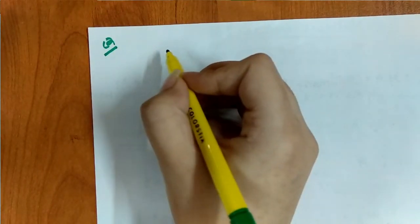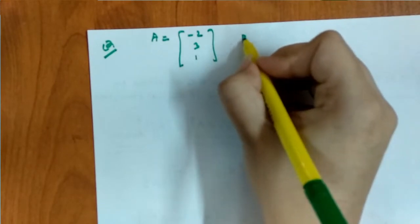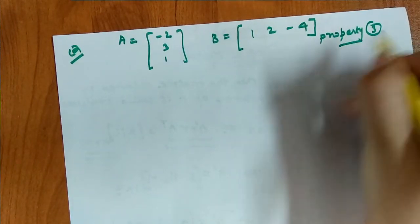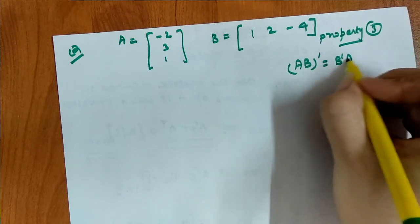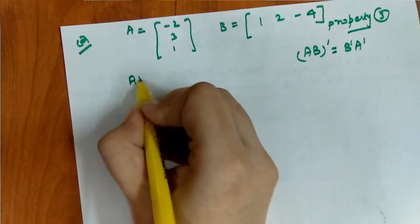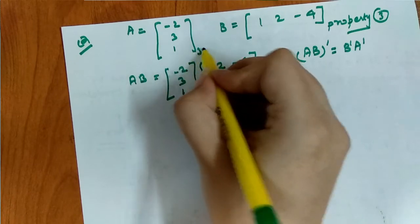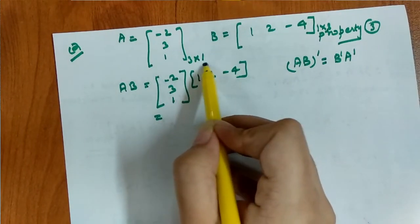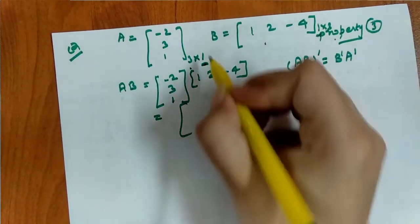Now we have another question to verify property 4, which states that (AB)^T = B^T A^T. We have matrix A with elements [-2, 3, 1] and matrix B given. We need to verify that taking the transpose of the product AB equals B transpose times A transpose.